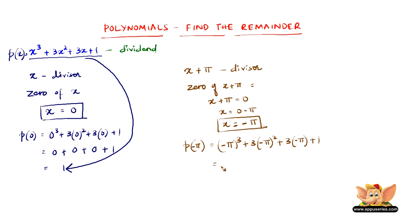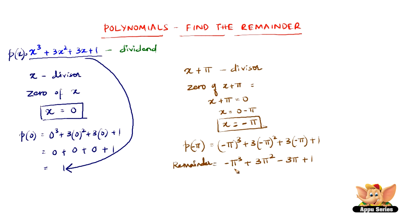This gives us minus pi cube plus 3 pi square, because minus pi into minus pi is plus pi square, and minus pi into 3 is minus 3 pi, plus 1. We cannot further simplify this, and therefore this is the remainder. So, minus pi cube plus 3 pi square minus 3 pi plus 1 is the remainder of x cube plus 3x square plus 3x plus 1.